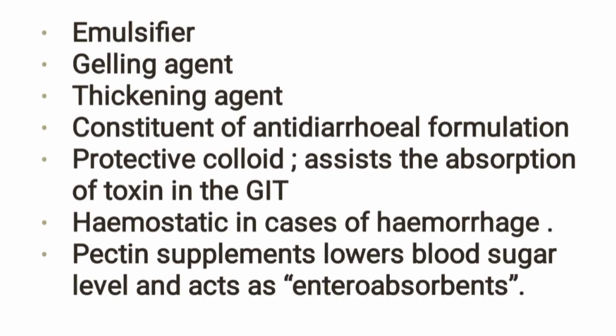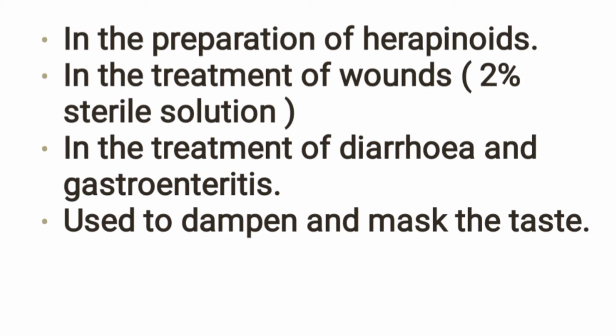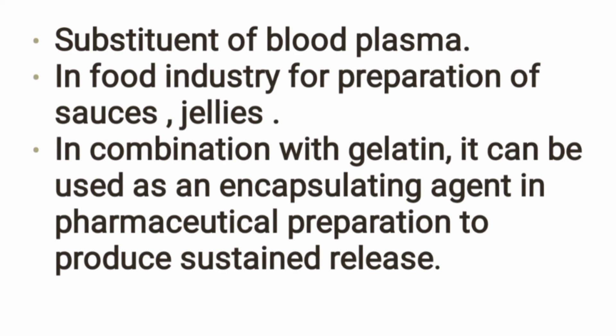There are numerous uses of pectin: it acts as a gelling agent, thickening agent, and in anti-diarrheal formulations. As a protective colloid in the gastrointestinal tract, it adsorbs toxins. It is used in hospital surgery. It is also hemostatic — it helps stop bleeding. Pectin supplements help regulate blood sugar levels and act as an enteroabsorbent. It is helpful in preparation of therapeutics and in treatment of wounds, diarrhea, gastroenteritis, and polyps. It also serves as a blood plasma substitute, in sauces and jellies preparation, and in encapsulation for capsule preparation and sustained-release formulations.